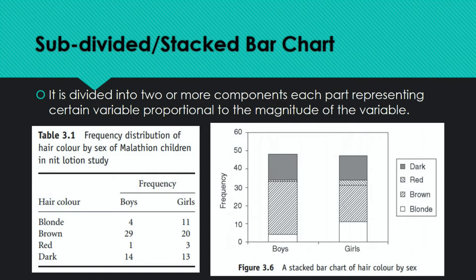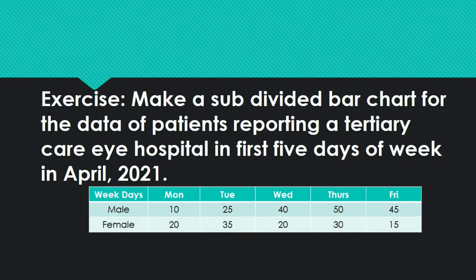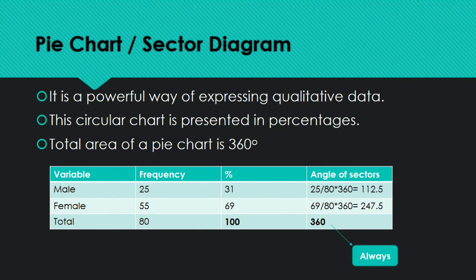The frequencies from the table are plotted within a single bar with subdivisions. This graph is useful when you want to present many things at once in one graph. When there are many variables in research, a subdivided bar chart covers them efficiently. Exercise: Draw a subdivided bar chart for male and female data across weekdays — Monday to Friday — plotting male and female frequencies as cut-off points within each day's single bar.